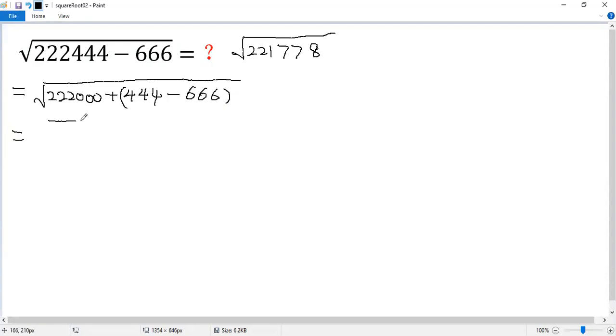So we get square root of 222,000 minus 222, which equals negative 222. Now we take the common factor 222 out. So we get 222 times 1,000 minus 1.